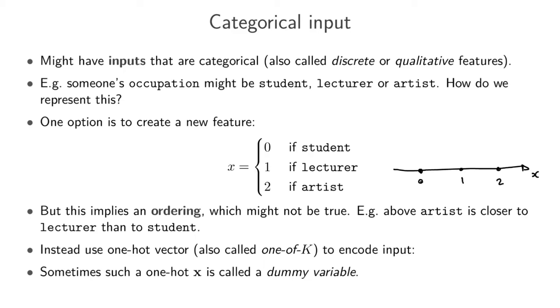So an alternative for this type of categorical input is to use a one-hot vector again. What we will do is define a new feature vector x which is also a one-hot vector. It would be, for example, if it's this then that would represent a lecturer. If the one is in this position here and we've got a zero here, then that would be a student. And if we've got a one in the last position, then that would be an artist.